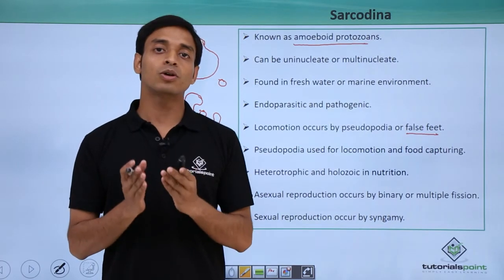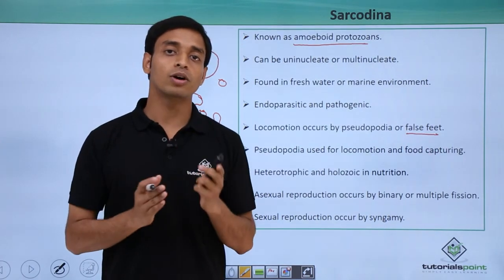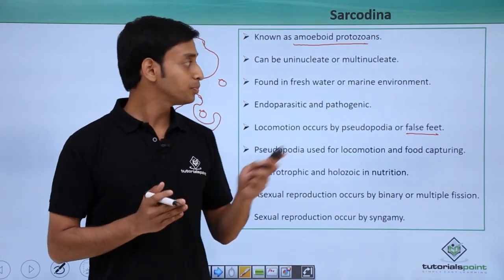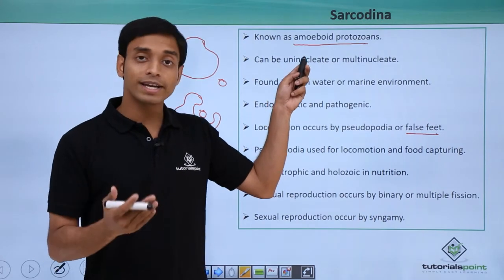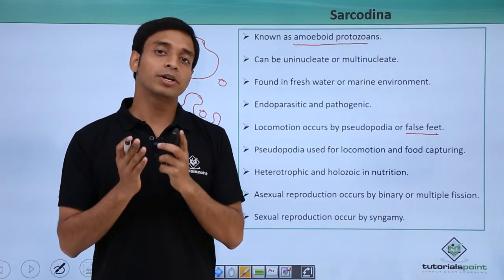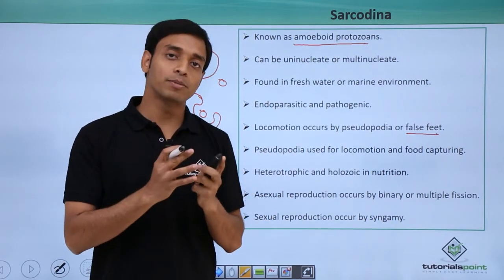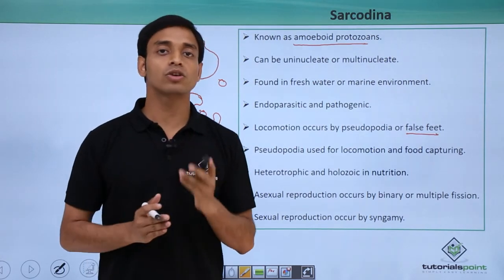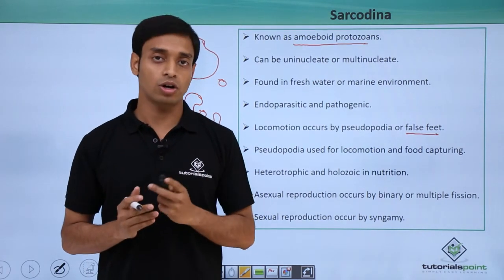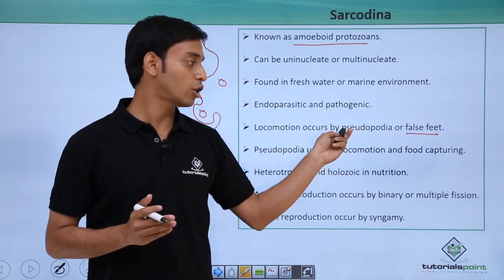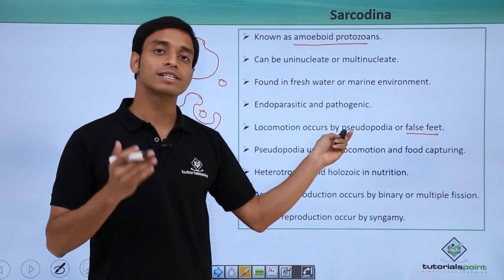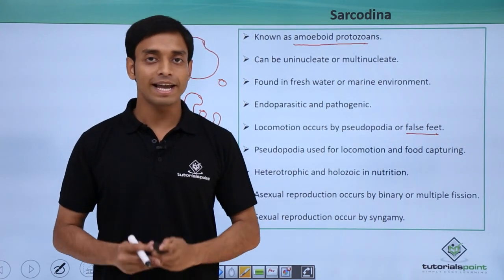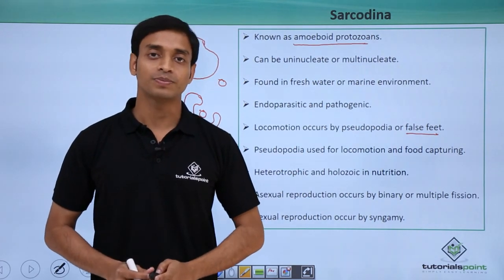In this video we have talked about a group of protozoans known as Sarcodina. They are amoeboid type of cells and have a locomotory organ known as false feet or pseudopodia. I hope you have understood and liked this video. Thank you.